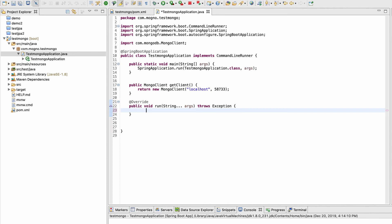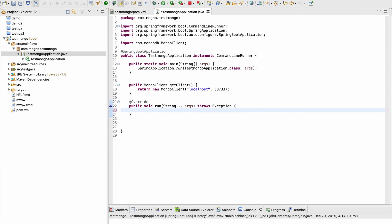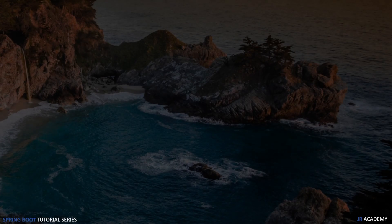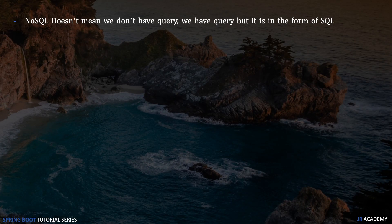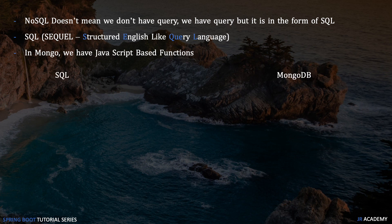The standard procedure for SQL database operations was: get connection, fire the query, get the result set, close the connection. For MongoClient the procedure is the same — get the connection via MongoClient, fire the query, get the result set, and close the connection. But in Mongo we don't have SQL queries. Remember, NoSQL doesn't mean we don't have queries — we have queries but not in SQL form. SQL is a Structured English-like Query Language, while Mongo is a JavaScript-based database so we use JavaScript-like functions.